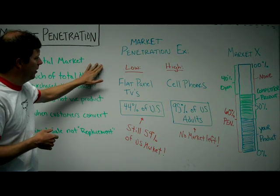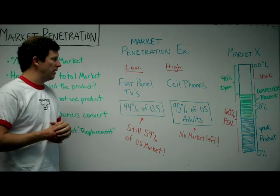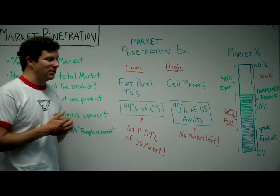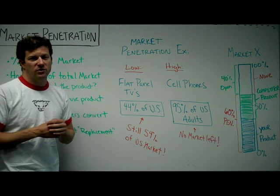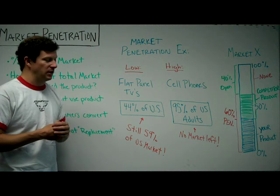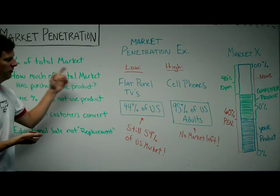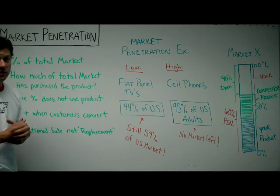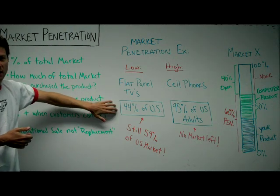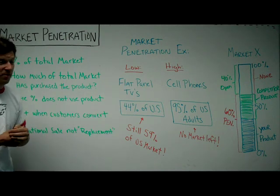An example of a product that right now has low penetration is flat panel televisions. Say 44% of U.S. households have a flat panel television — that means 54% of the market does not. So when someone asks what the market penetration for flat panel TVs is, the answer would be 44%, regardless of whether they have Sony's, Toshiba's, or any other flat panel maker.